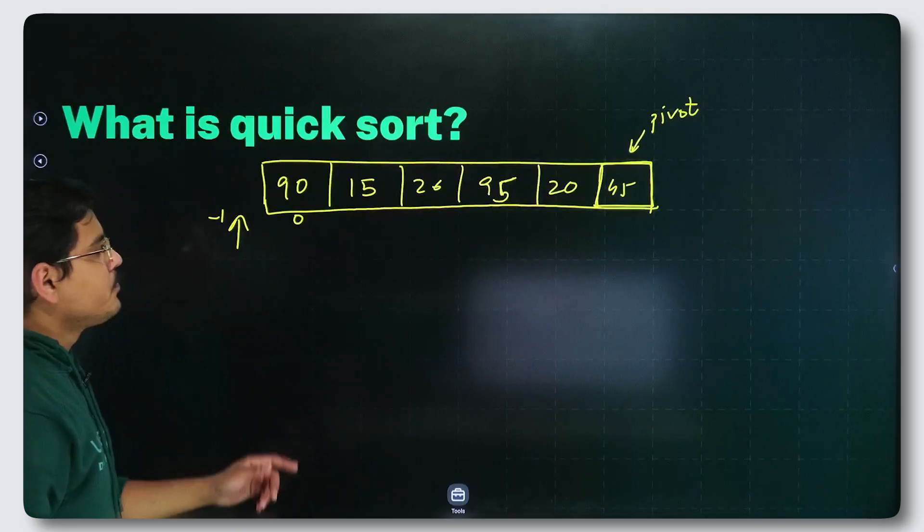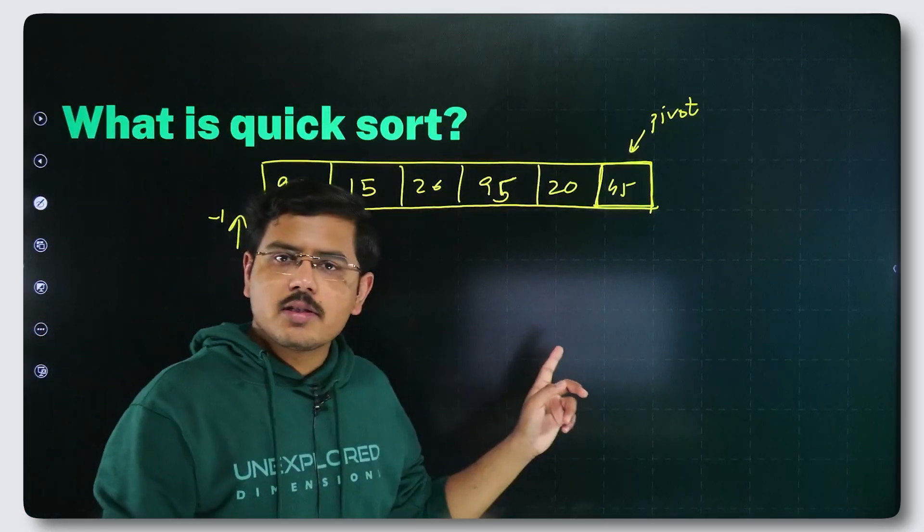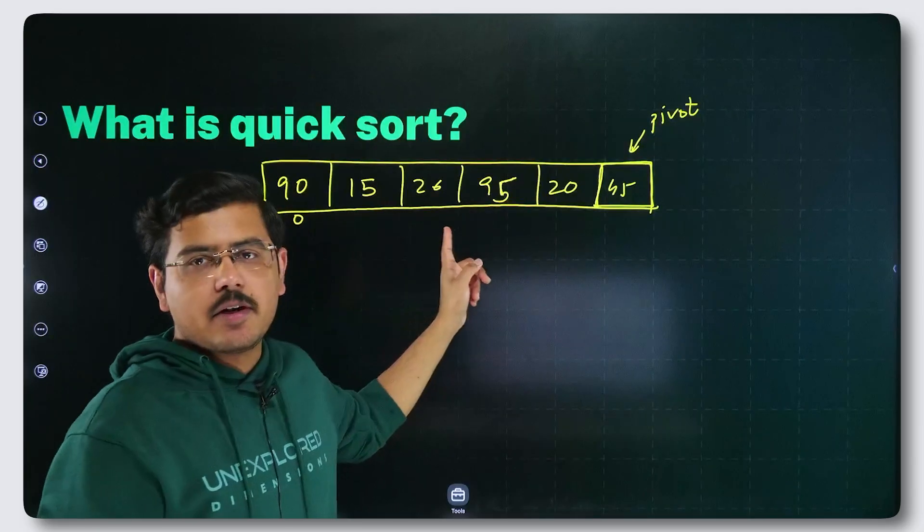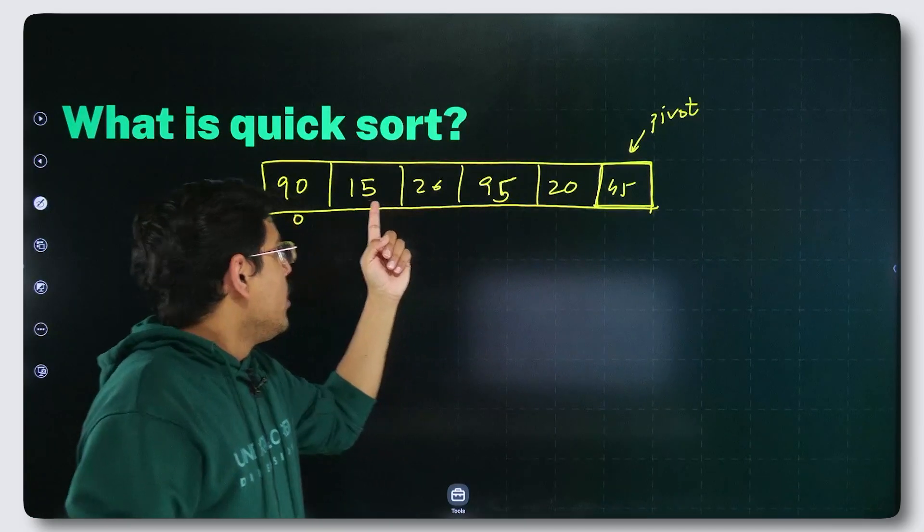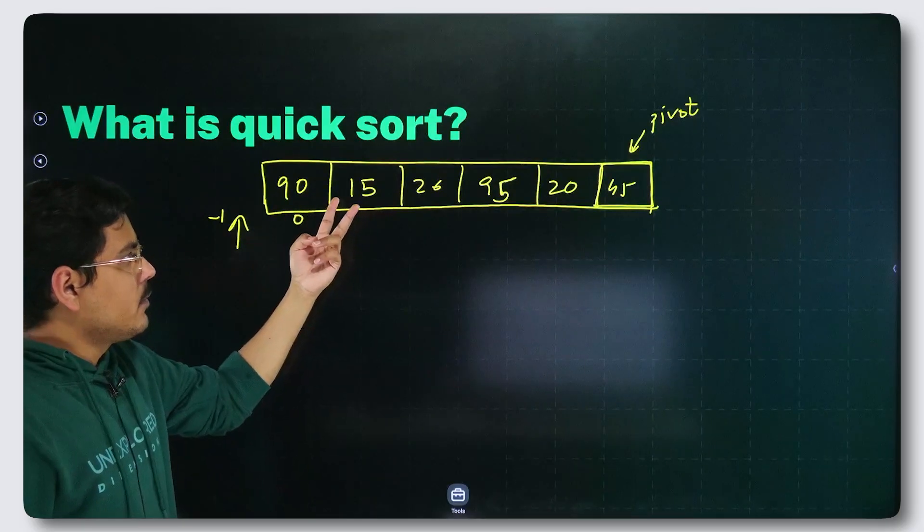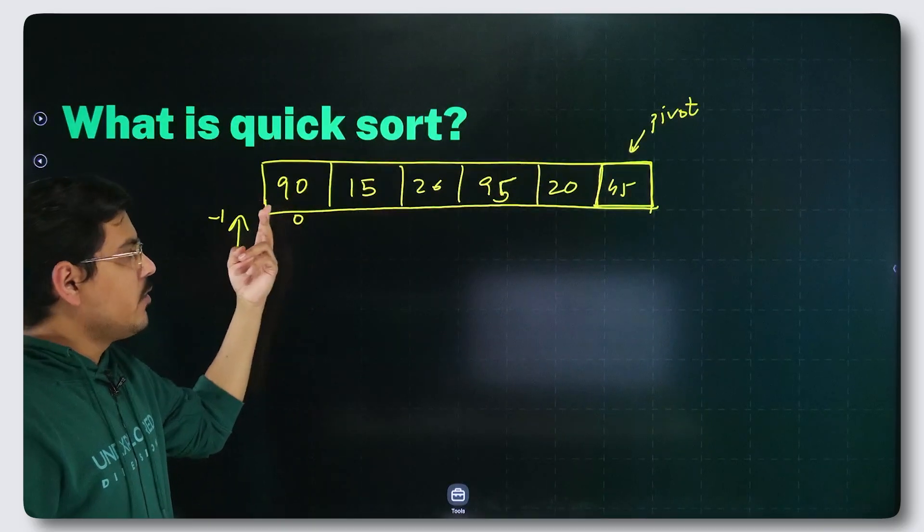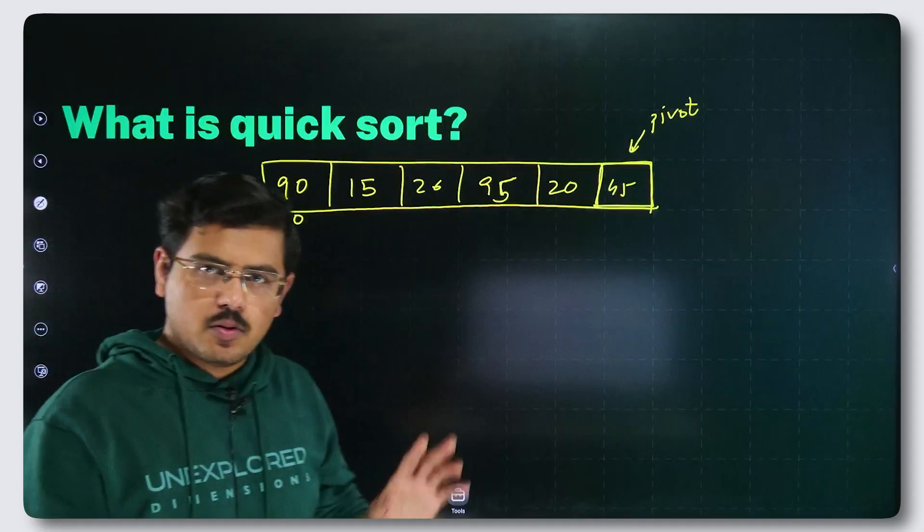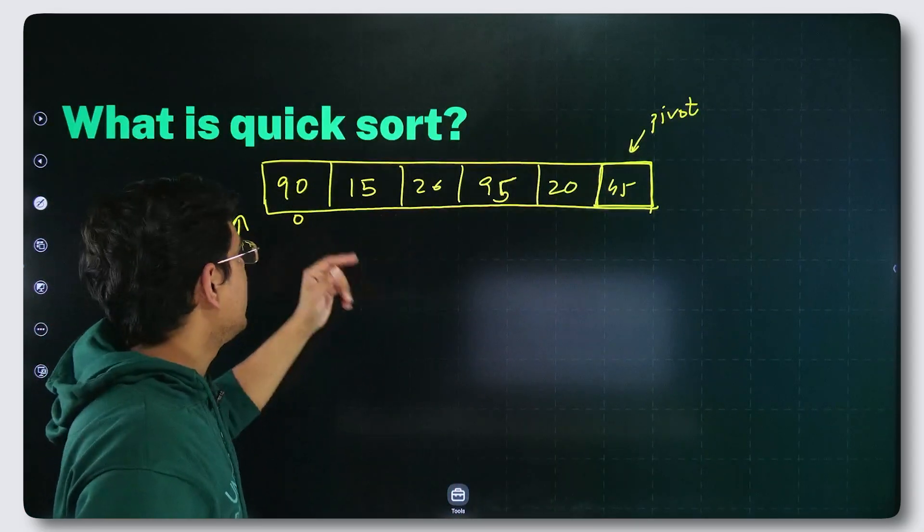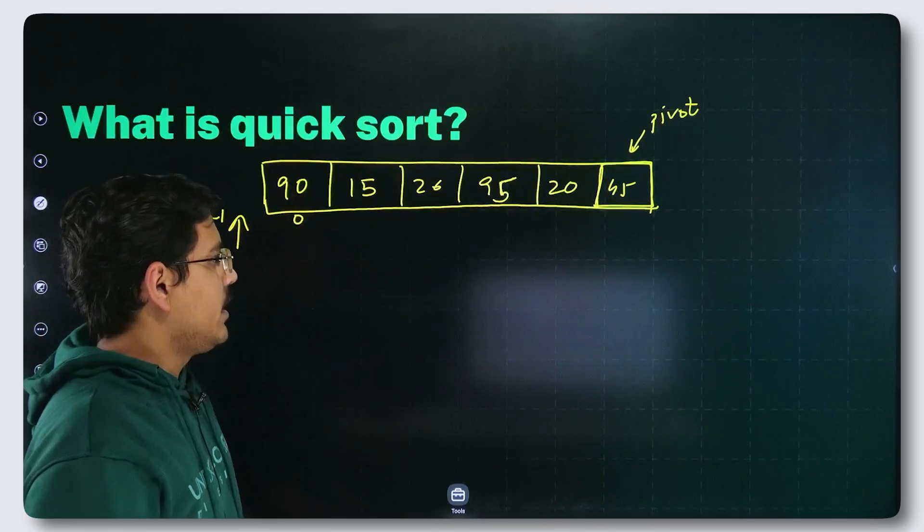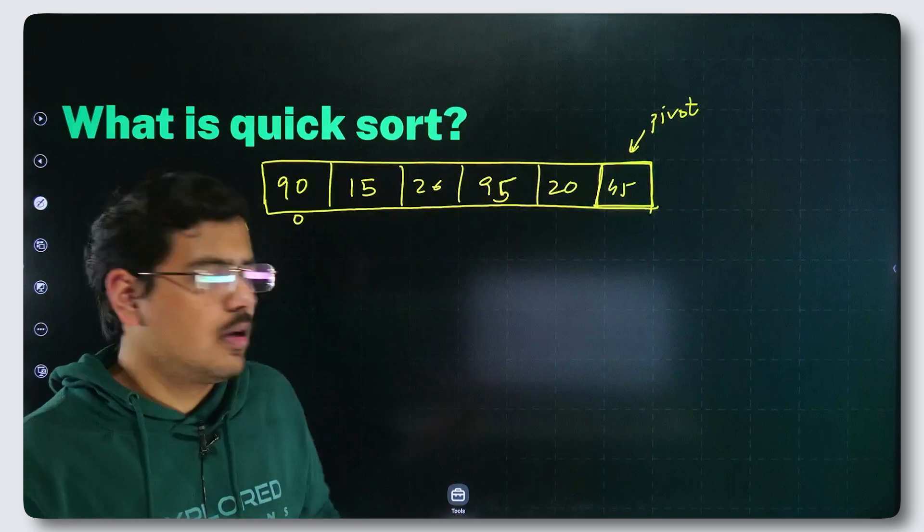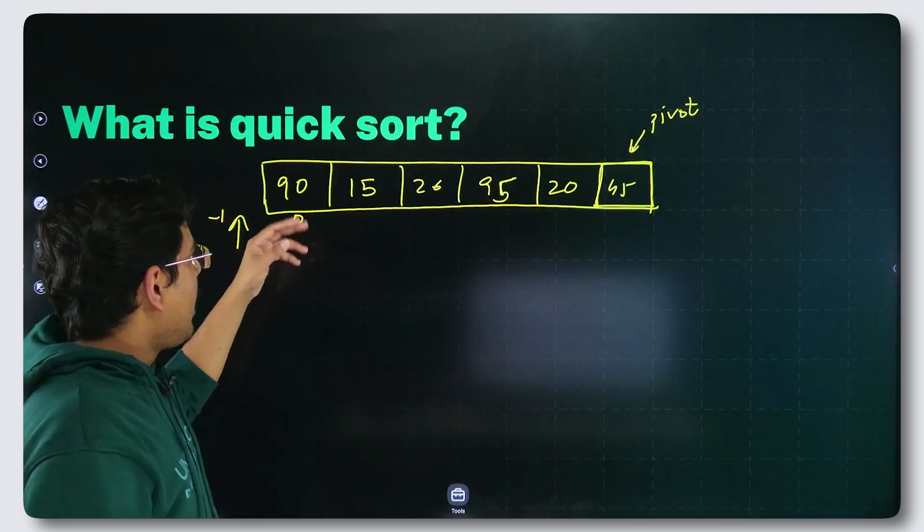Now, the basic logic is whenever you find an element smaller than pivot, you increment this pointer and swap that particular smaller element with the element on the pointed place. I will show you what I am saying. Let us go further and check. First element that I encounter is 90. It is greater than 45. Do nothing. Eat five star. Simple.